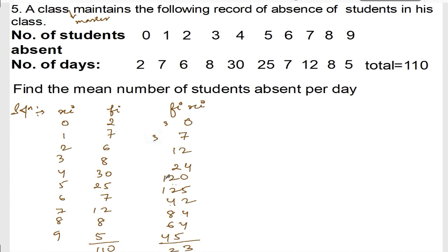Continuing: 3 plus 4 is 7, plus 8 is 15, plus 6 is 21, plus 4 is 25, plus 2 is 27, plus 4 is 31. So I get 523. This is summation of fi xi, and n equals 110.